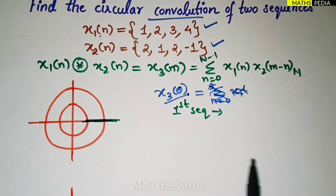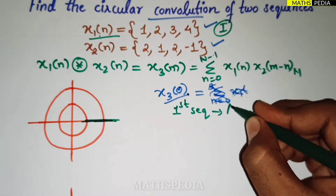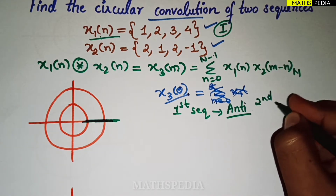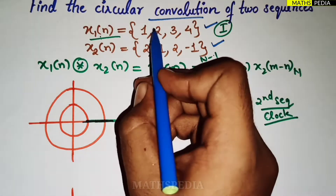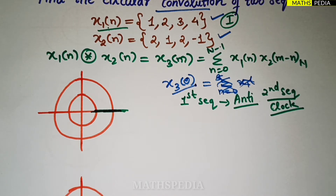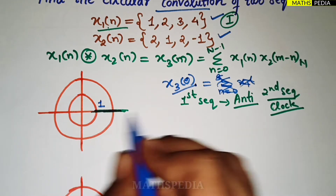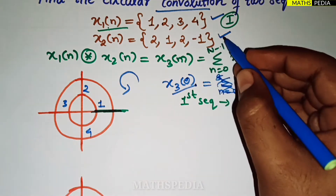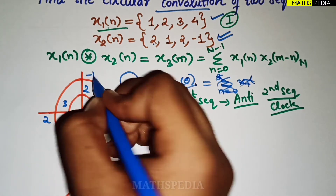Starting from the reference point, write the first sequence in the anti-clockwise direction: 1, 2, 3, 4. I'll take the outer circle for the first sequence. For the second sequence, write it clockwise starting from the same reference point: 2, 1, 2, -1. So the second sequence goes clockwise: 2, 1, 2, -1.